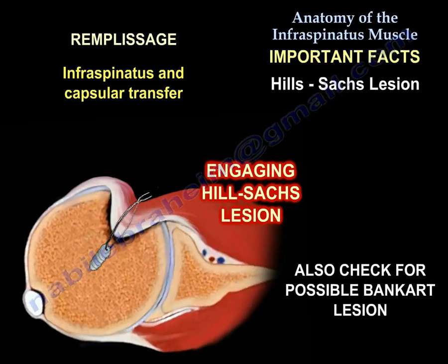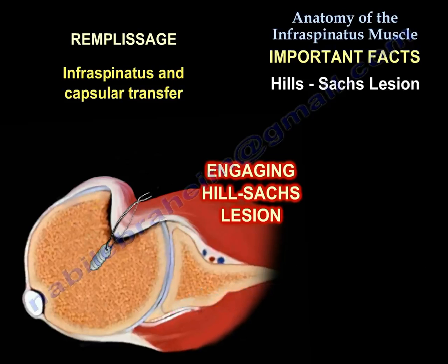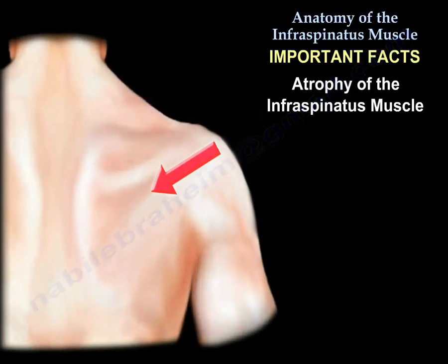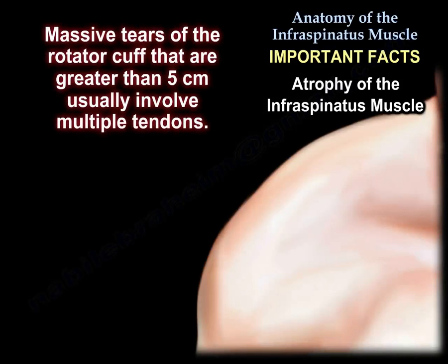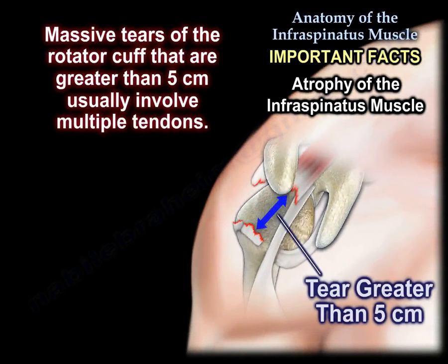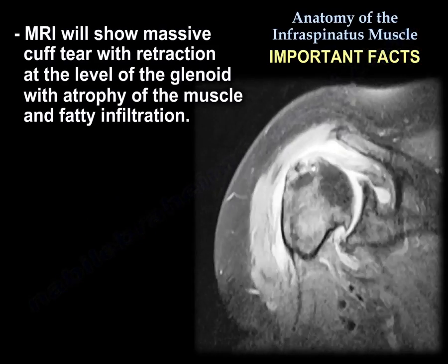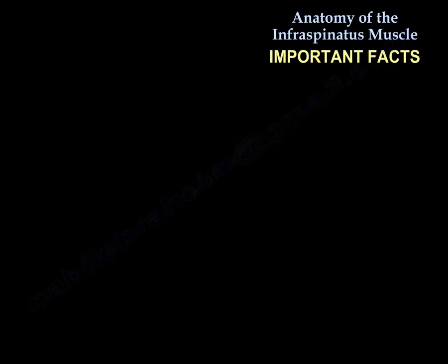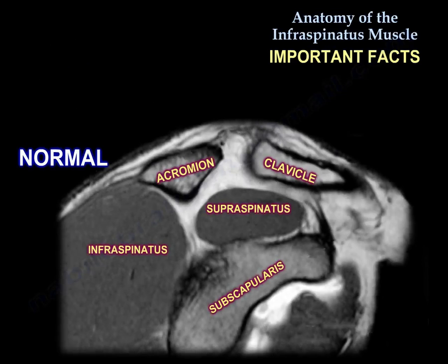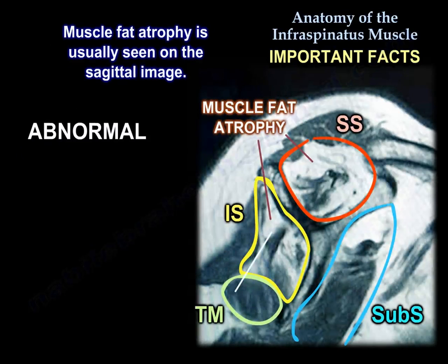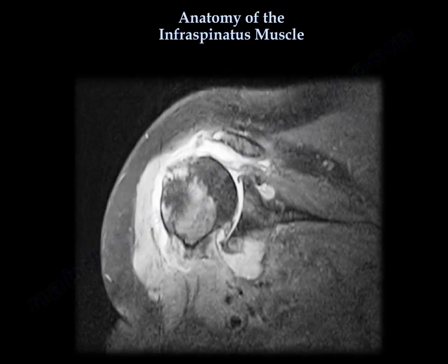Also check for Bankart lesion for possible concomitant repair. Atrophy of the infraspinatus muscle is an important topic. If you find atrophy of the infraspinatus fossa visible in a patient, that patient may have entrapment of the nerve or may have a chronic massive tear. Massive tear is defined as more than five centimeters complete, or complete tears with two tendon involvement, or tears with retraction to the glenoid. Check the degree of muscle fatty atrophy, which is best seen on sagittal MRI. Muscle atrophy is irreversible and usually indicates a poor outcome after rotator cuff tear repair.